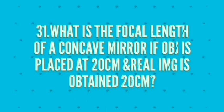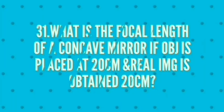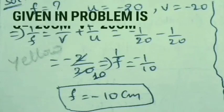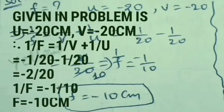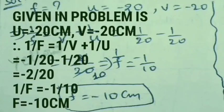What is the focal length of a concave mirror if object is placed at 20 centimeters and real image obtained at 20 centimeters. Given in problem is u equal to minus 20 centimeters, v equal to minus 20 centimeters. Use mirrors formula, 1 by f equal to 1 by v plus 1 by u. Substitute u and v, then take LCM, cancel and write reciprocal, then you will get the answer f equal to minus 10 centimeters.